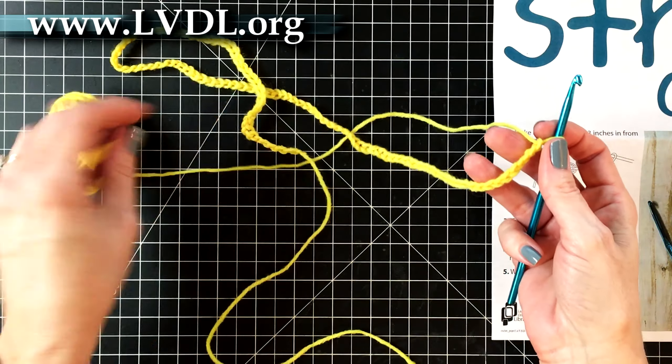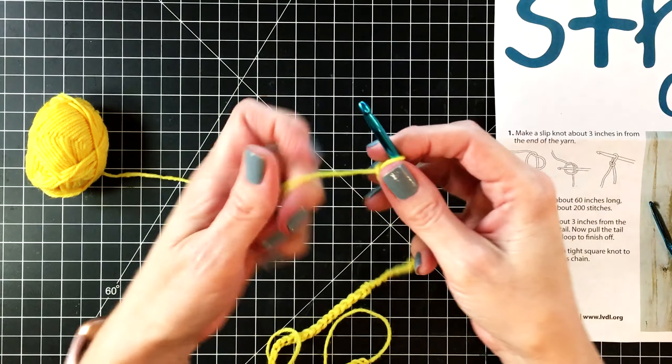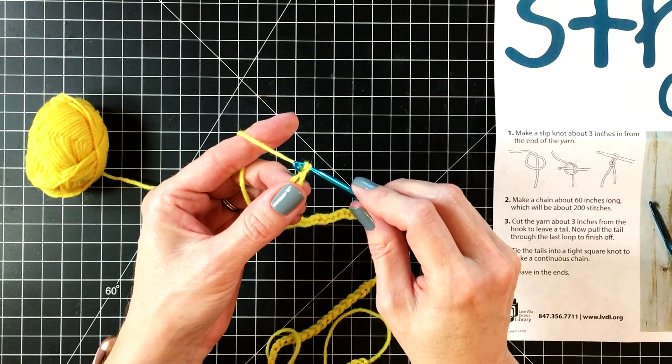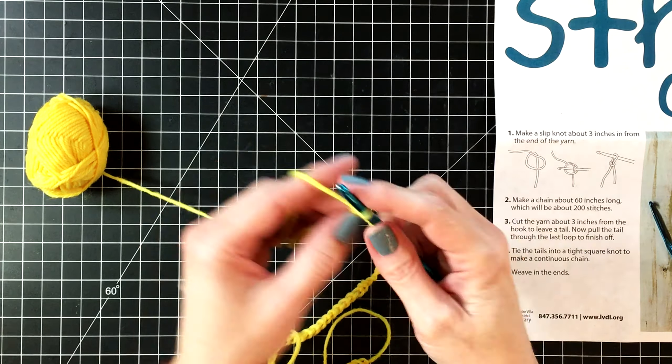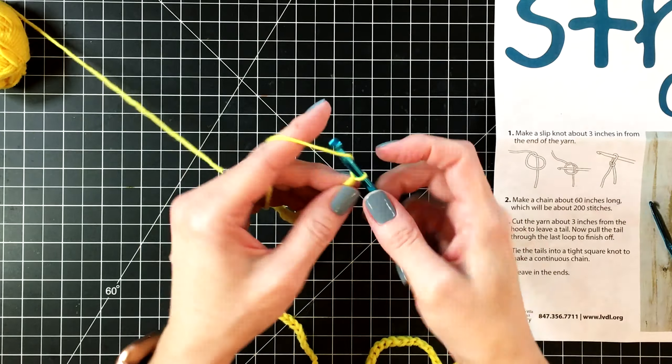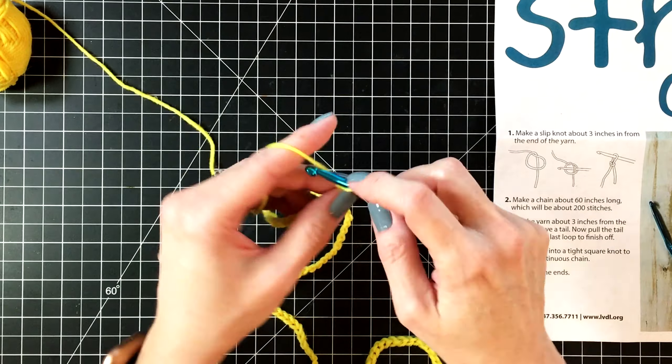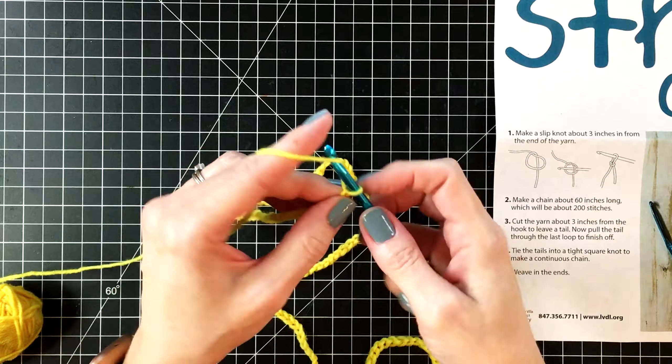So here is our project halfway through. This is 100 chains. We have 100 more to go but I just wanted to stop and show you that. When I first started crocheting it was difficult for me to get my chains even. Some would be really tight and some would be really loose. But as I practiced my stitches became more even. So don't lose heart just keep practicing and you'll get it.